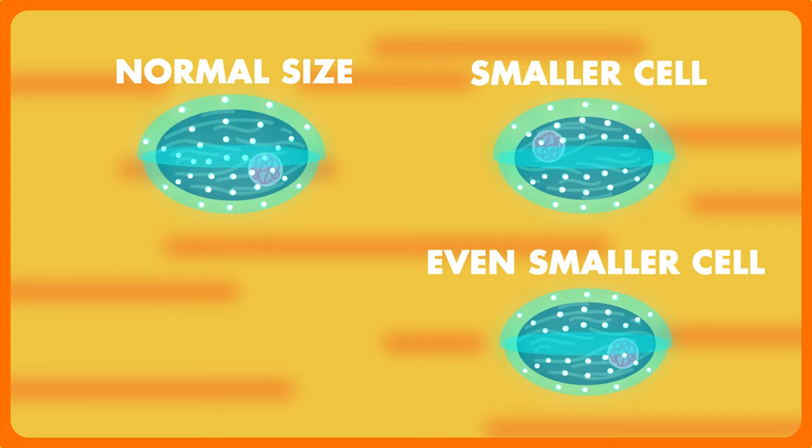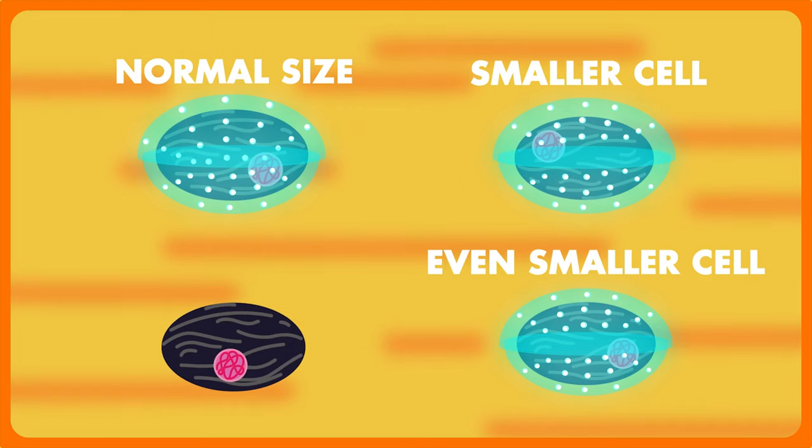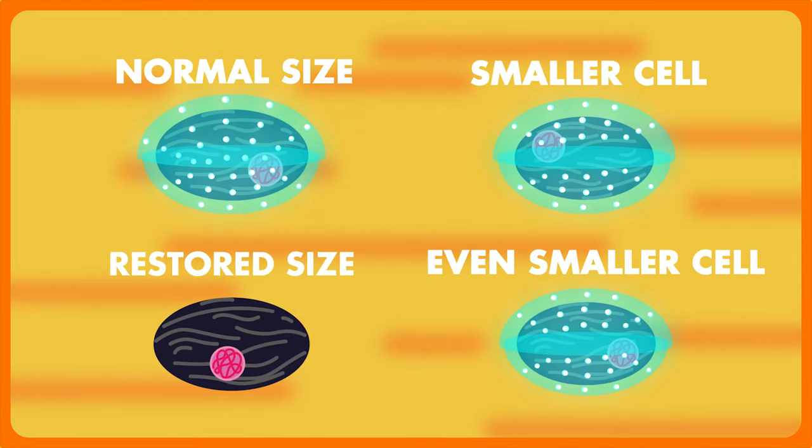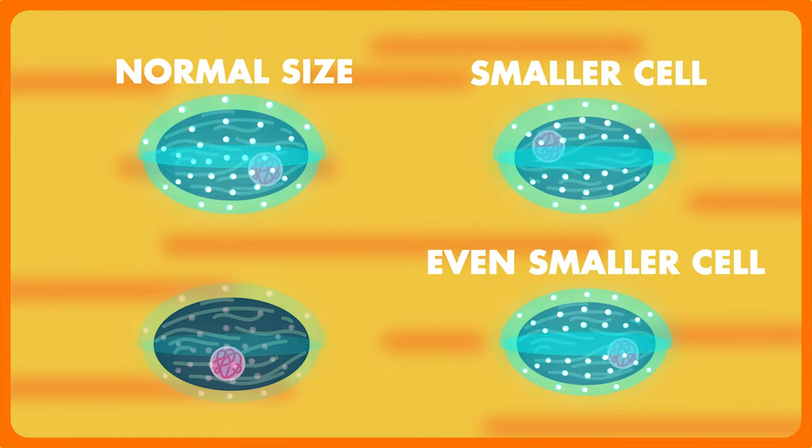But when the size of cell becomes so small that further mitosis is not possible, the diatoms enter sexual phase and produces gametes by meiosis. These gametes fuse to form a diploid zygote called the auxospore which first regains the original size and then produces the epitheca and the hypotheca.